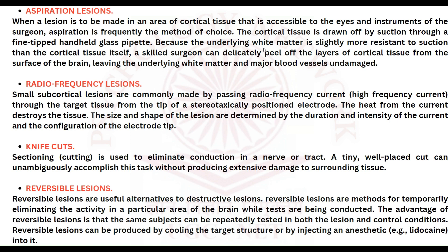Finally, there are reversible lesions. As the name suggests, the lesions can be reversed and the animal can recover. Reversible lesions are usually made by cooling the target area or by injecting an anesthetic — lidocaine, for example, is sometimes used. One important advantage of reversible lesions is that the same subjects can be used in controlled conditions and even in clinical trials.